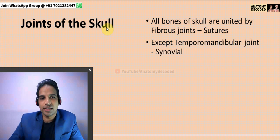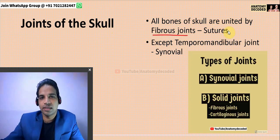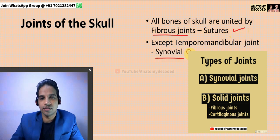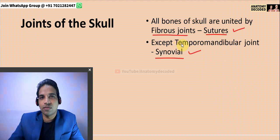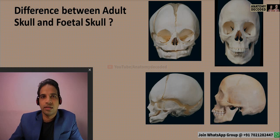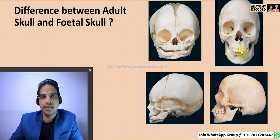In the skull, almost all bones are united by fibrous joints referred to as sutures — a type of solid joint — except one joint: the temporomandibular joint, which is a synovial variety of joint. The ossicles are also synovial joints but are not included in the joints of the skull and must be considered separately.